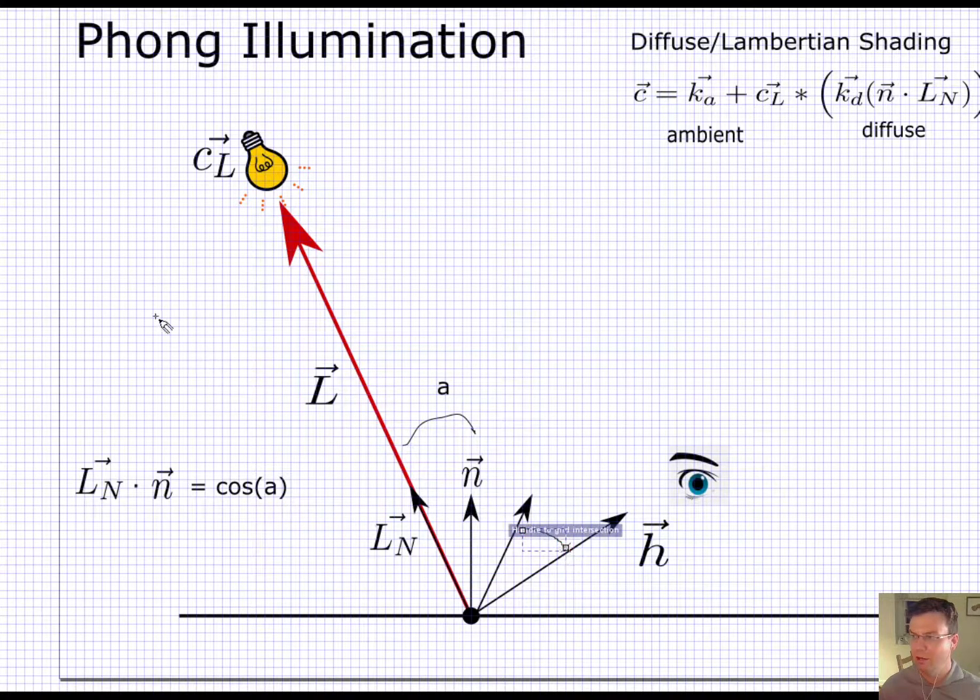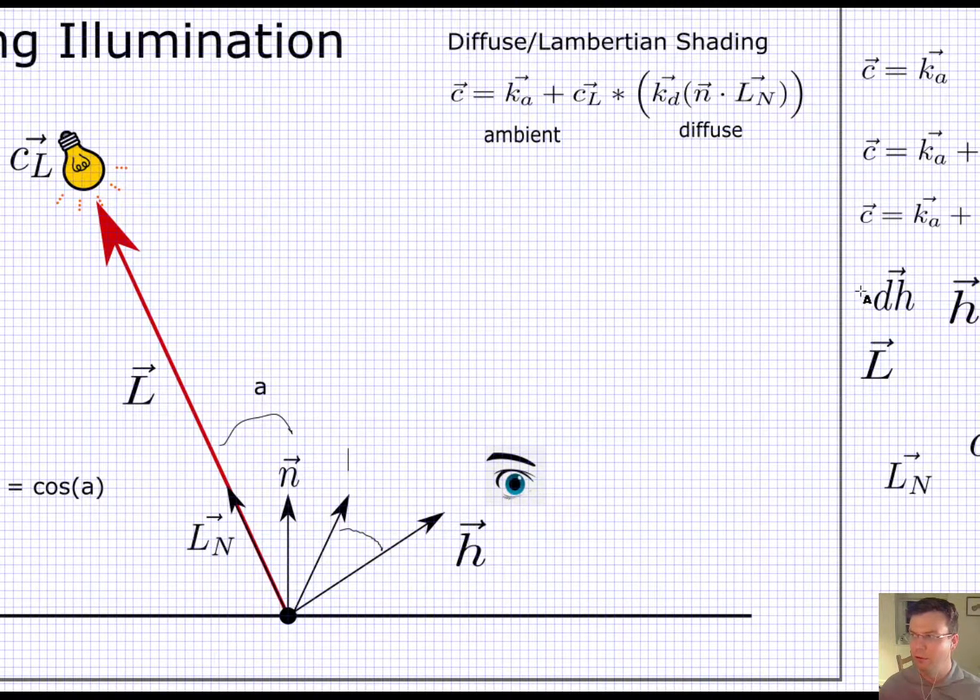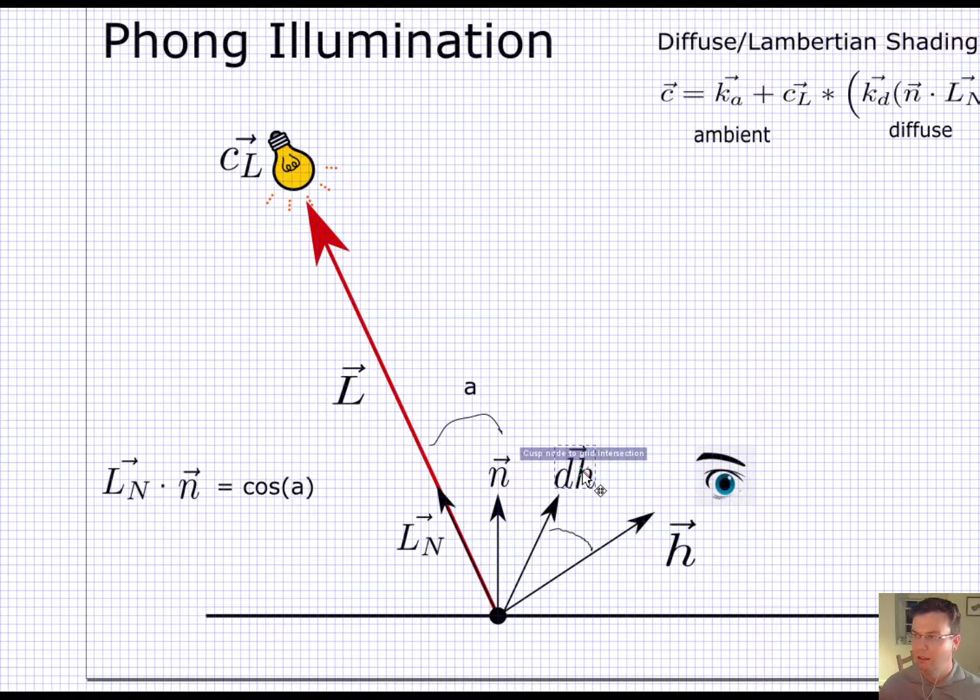So let me call the angle between - I'll call this here dh. So dh is the reflected direction here. So here's the direction to the light. This is reflected about the normal.